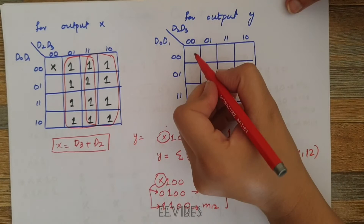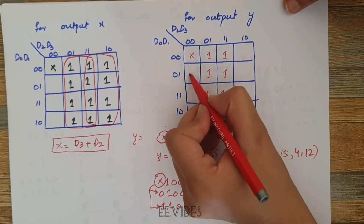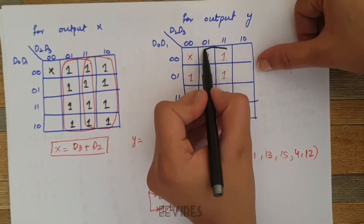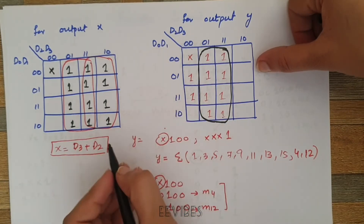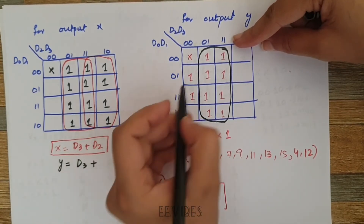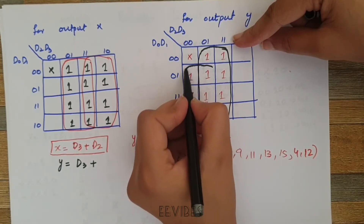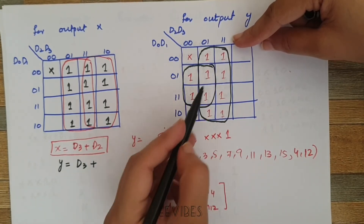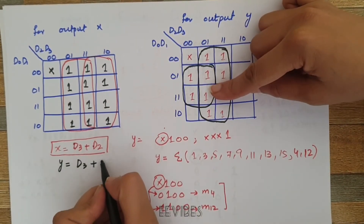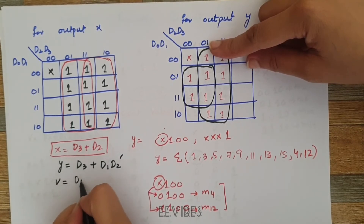Writing the function for y from the K-map: joining the 8 adjacent squares where D3=1 gives D3. For the remaining group, we prefer combining the 4 squares covering the 1-valued minterms rather than the don't care squares. Combining those 4 adjacent squares gives D1 AND NOT(D2). Therefore, y = D3 + D1·D2'.